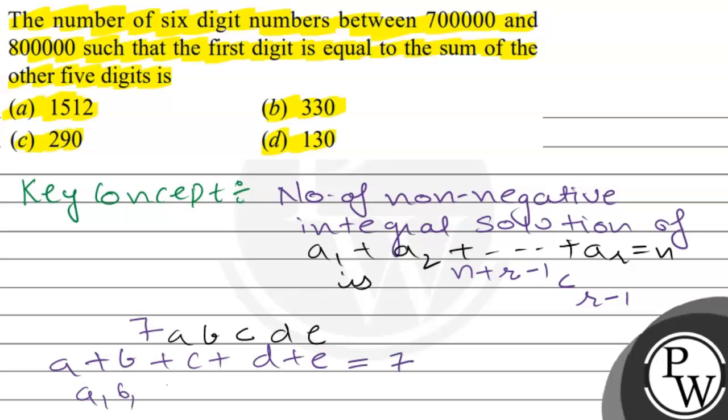Also, A, B, C, D, and E are all greater than or equal to 0.